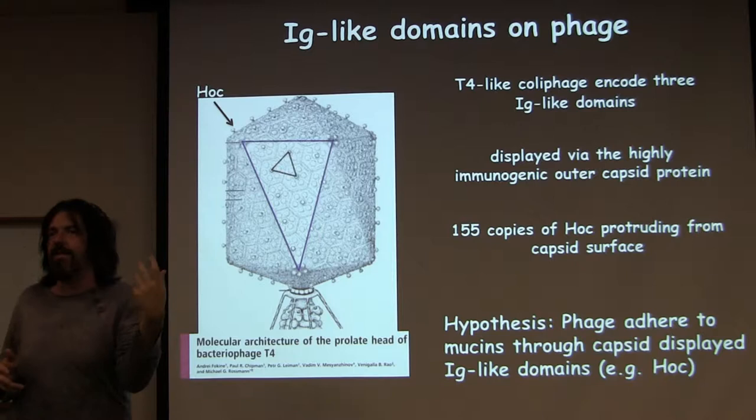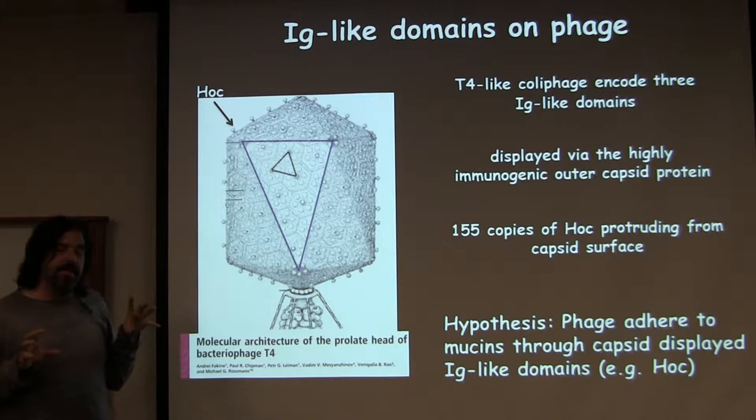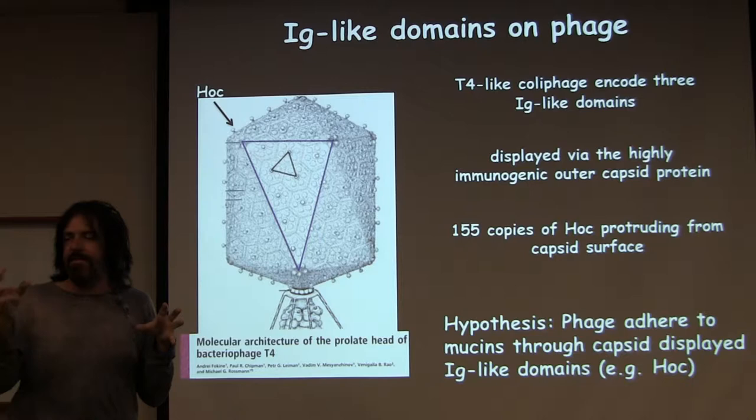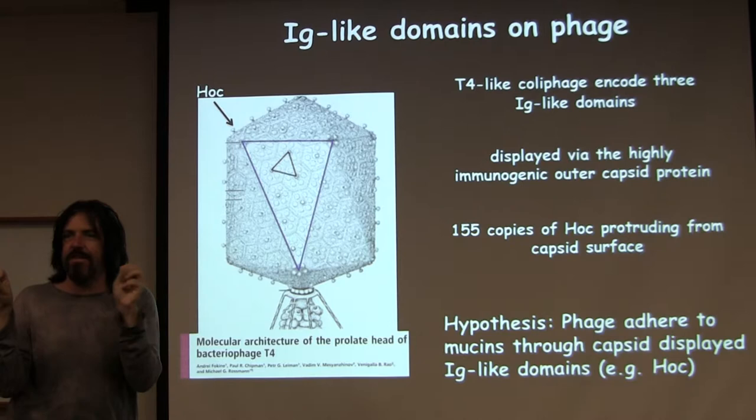What we know about them is that they're basically hypervariable. They stick out on the phage, and people had hypothesized that what they were doing in the environment is that they were helping find the microbial host, because it has glycoproteins sticking out. However, you don't need them in the lab — a HAWC knockout kills just as nicely as a HAWC wild type.